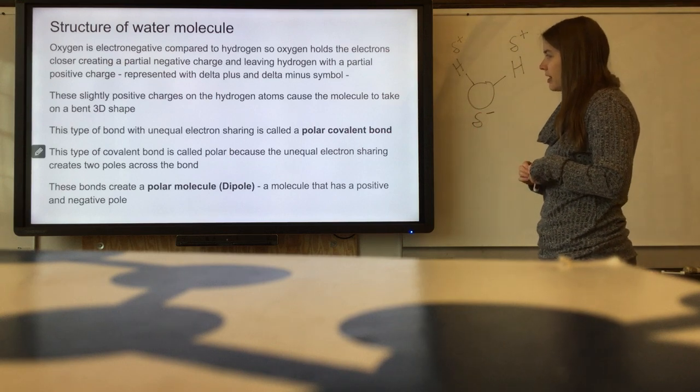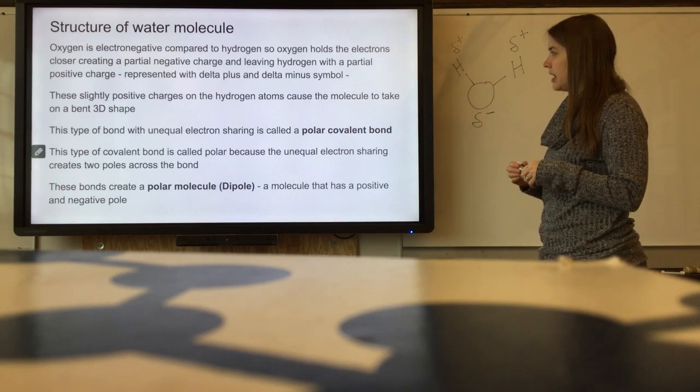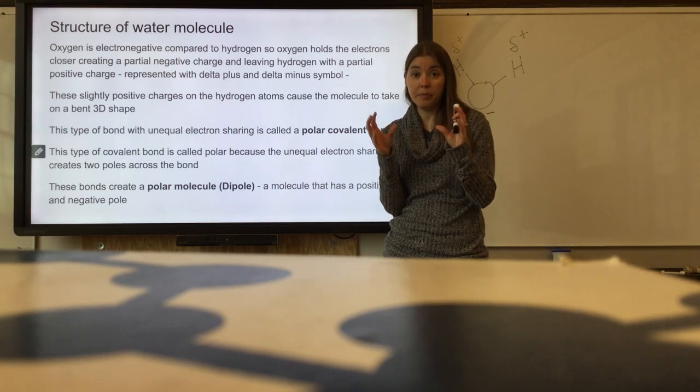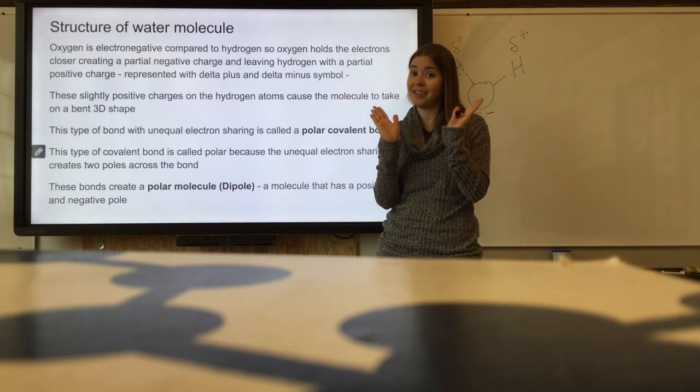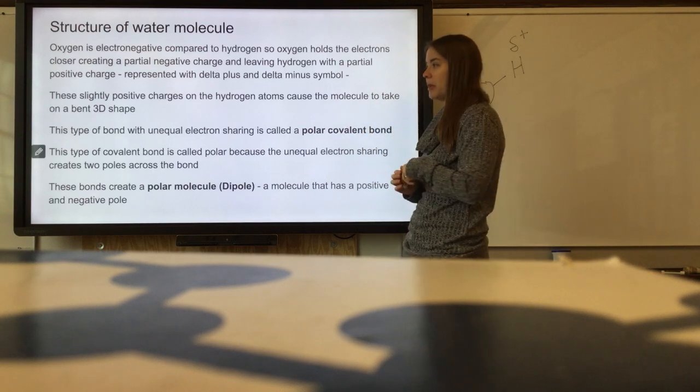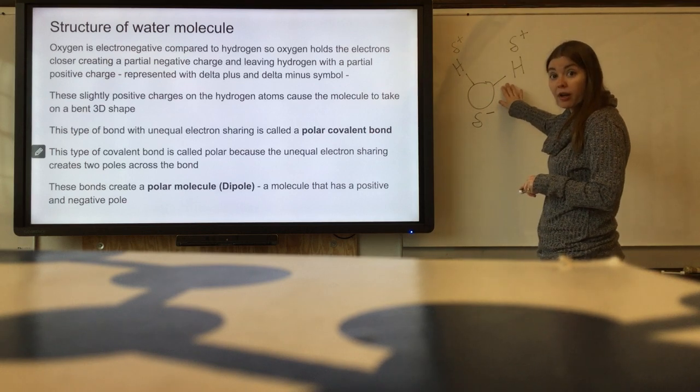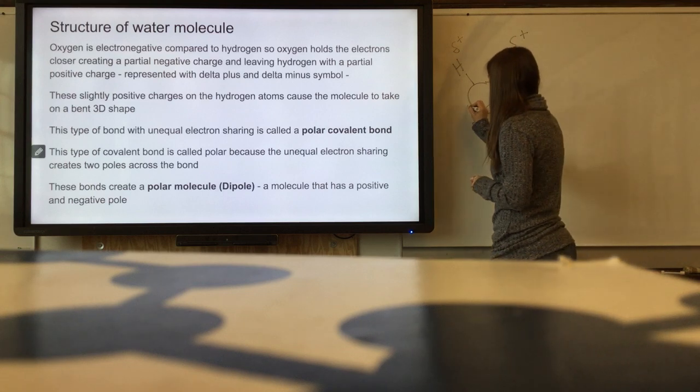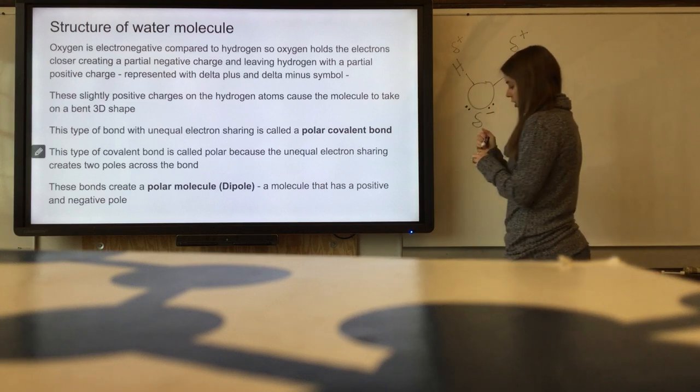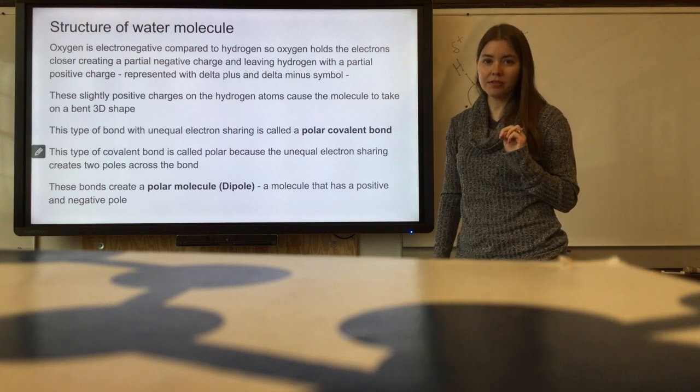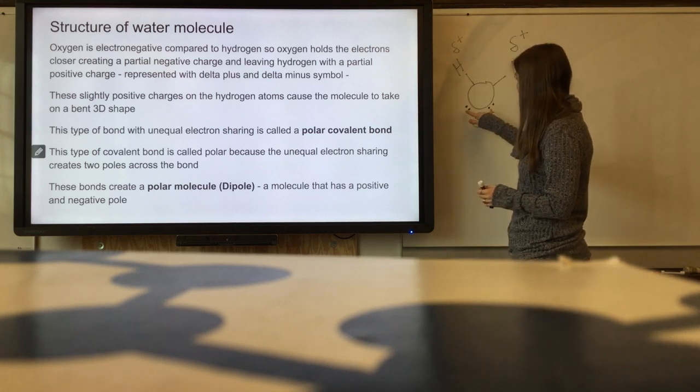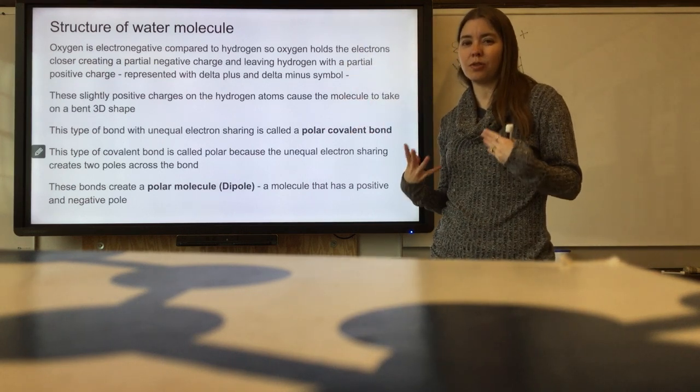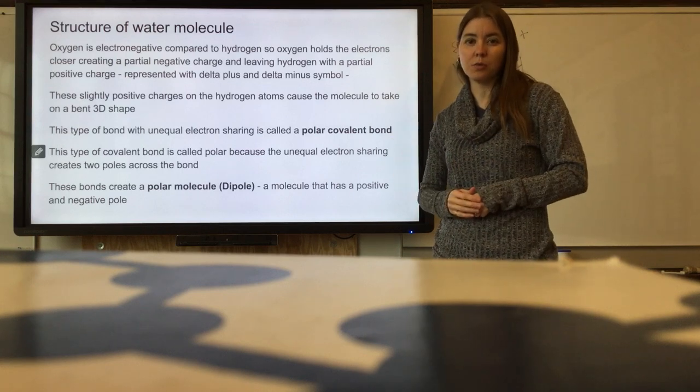These slightly positive charges on the hydrogen atoms cause the molecule to take on that bent 3D shape. Remember we did that molecular model lab, and you should have seen it doesn't go straight out. It has a bent shape in the three-dimensional world, which is why I always draw it this way with that bent idea. The other reason is because oxygen has two sets of lone electrons, so everything wants to be as far apart from each other as possible. That's three-dimensionally the best, most stable way it does it.